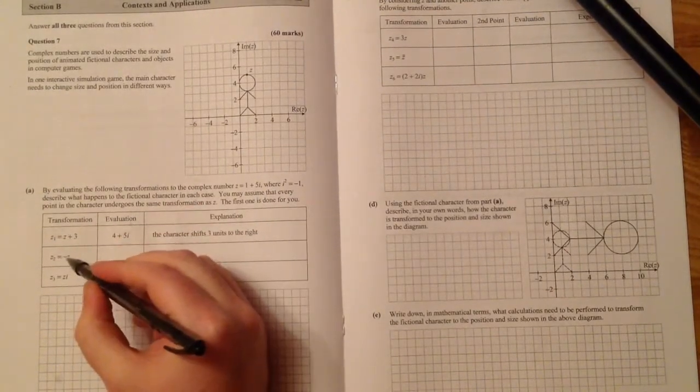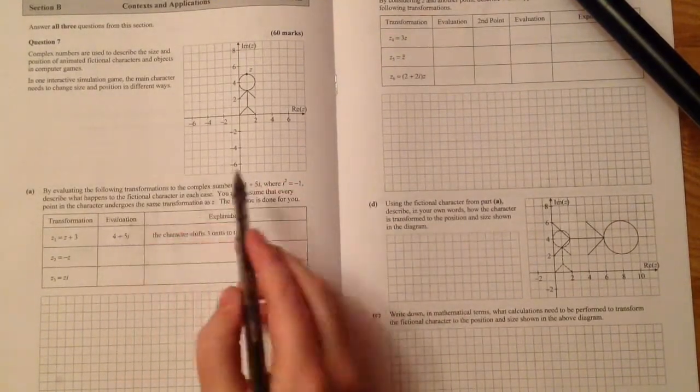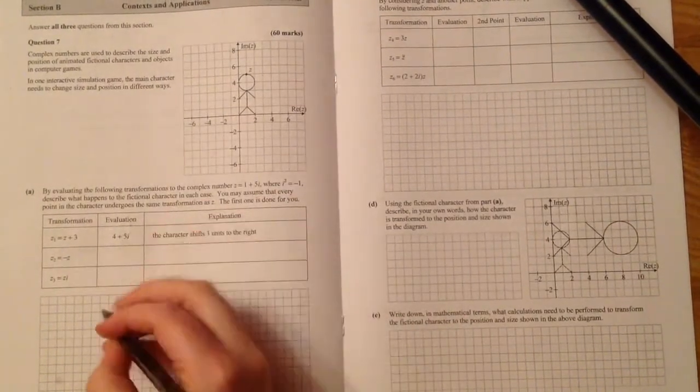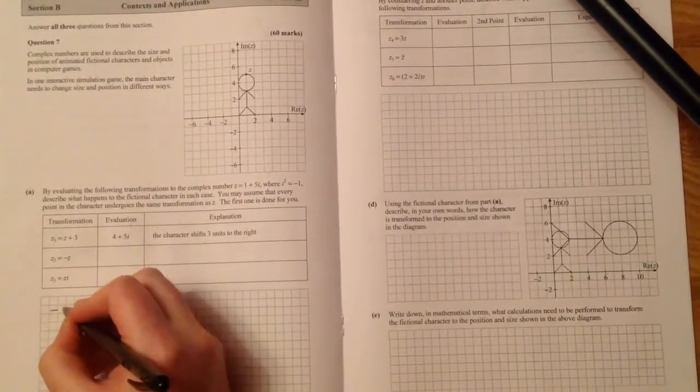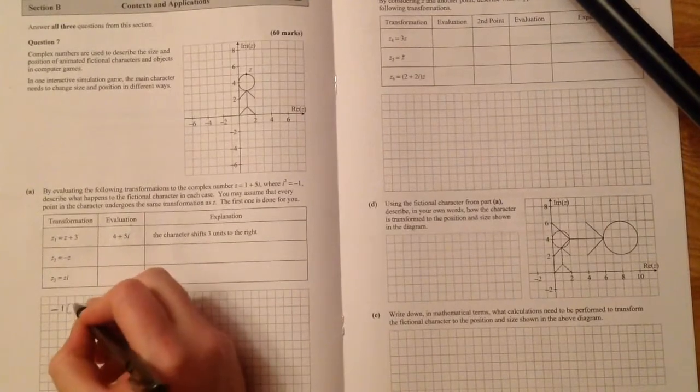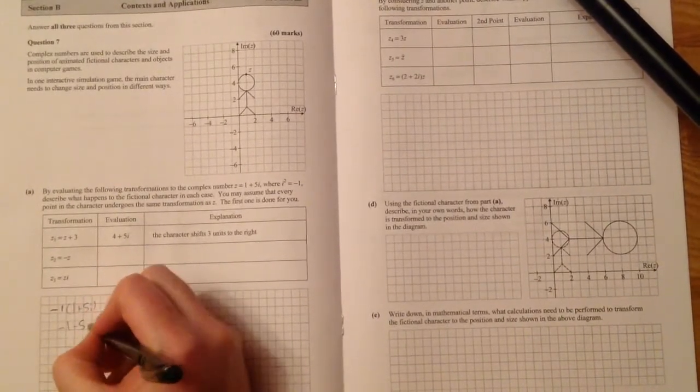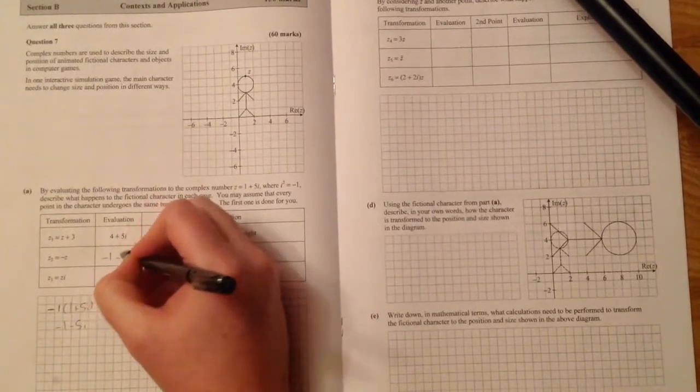The first one is saying to find minus z. So minus z is going to be the original number multiplied by minus 1. So it's going to be minus 1 multiplied by 1 plus 5i. It's going to be minus 1 minus 5i. So first one here, minus 1 minus 5i.